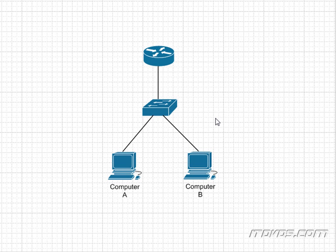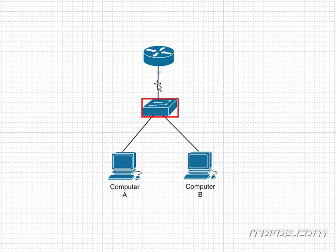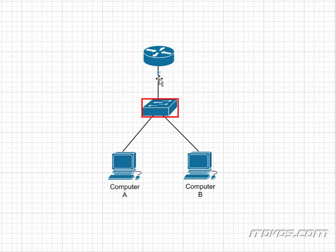Let's add a router. Now how many collision domains do we have? We have three: one, two, and three. Each device is plugged into a different port on the switch, and that makes each link its own collision domain. Now remember, routers do break up collision domains, but we only have one link here, so we don't have one collision domain for this port on the router and another for this port on the switch — it's just one link, so one collision domain. So three total collision domains in this example.